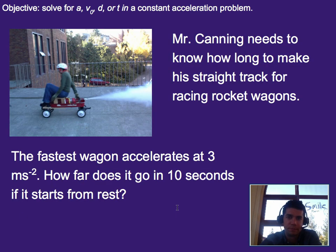So let's do a practice problem. Mr. Canning needs to know how long to make a straight track for racing rocket wagons like this one right here. The fastest wagon accelerates at a rate of three meters per second squared. How far does it go in ten seconds if it starts from rest?